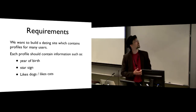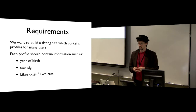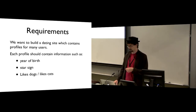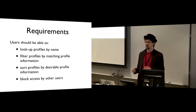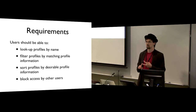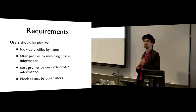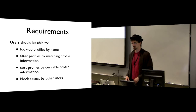So the requirements for our dating site: we want to build a dating site that contains profiles for many users. Each profile should have information like their year of birth, their star sign, whether they like dogs or cats, and other such exciting information. We need some way of looking up profiles by name, some way of filtering profiles by matching requirements, some way of sorting profiles by desirable information, and some way of having some users block other users.